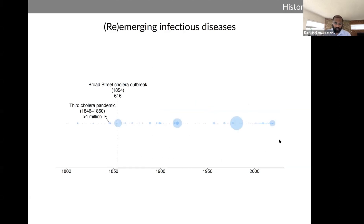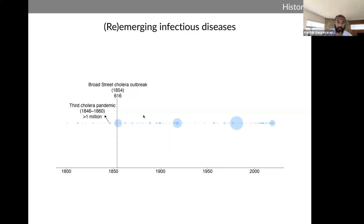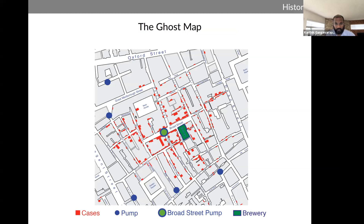The first public health intervention taken based on an epidemiological study was during the Broad Street cholera outbreak — an outbreak in London during the third cholera pandemic, which was raging worldwide at the time. It was mainly thought that cholera spread through air. But John Snow, an anesthesiologist, had the hypothesis that cholera was mainly transmitted via water. During the 1854 outbreak, he mapped the cases of cholera and found that many clustered around one pump on Broad Street, hypothesizing the outbreak was being transmitted due to contaminated water at that pump.